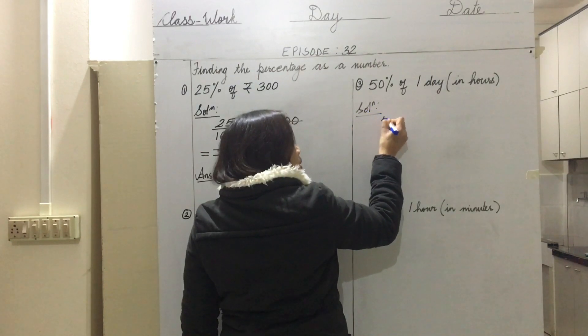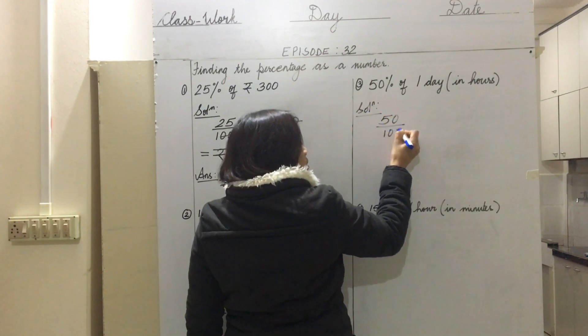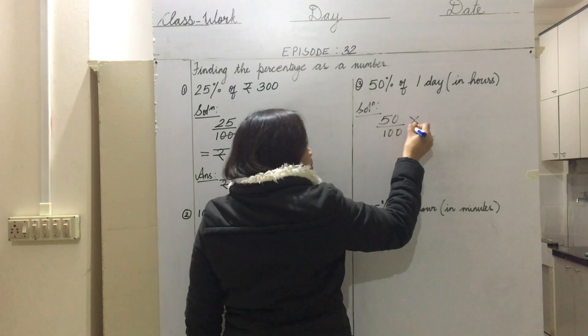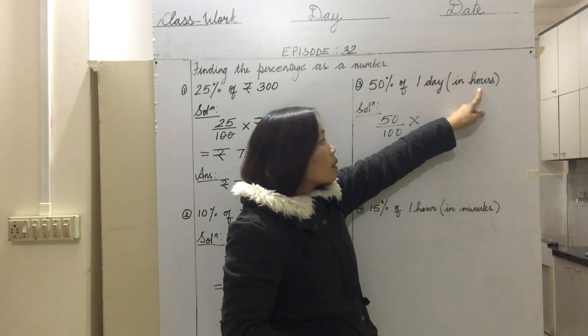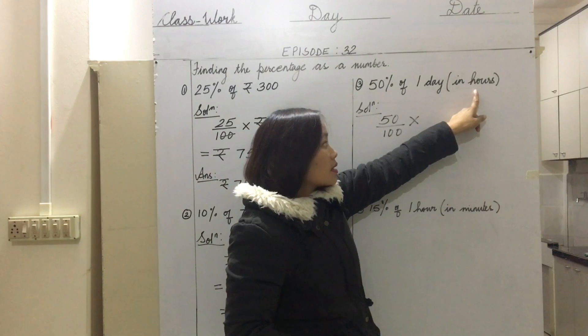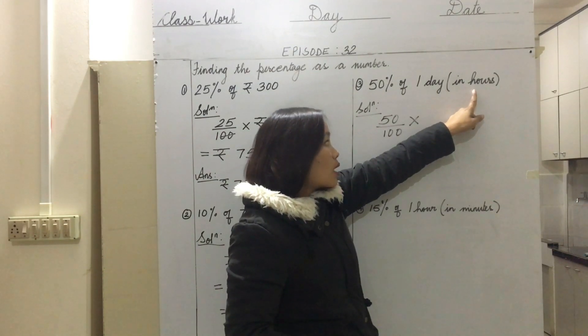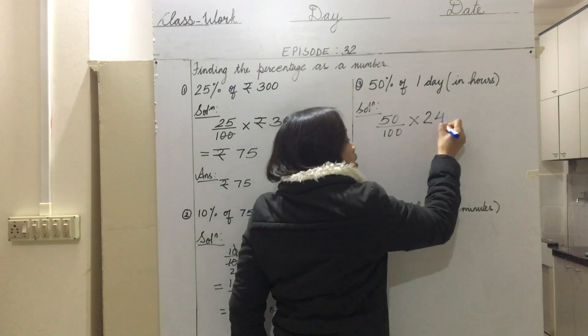50 percent means 50 out of 100. Instead of 'of' we write multiply, so one day - when we convert it into hours, how many hours do we have in one day? 24 hours. So we write, instead of one day, we will write 24 hours.